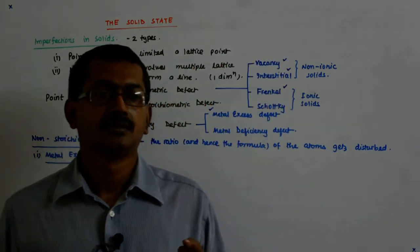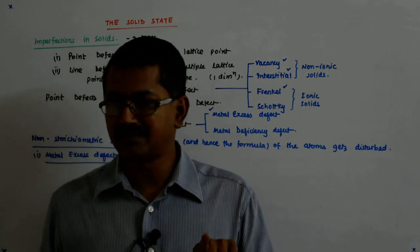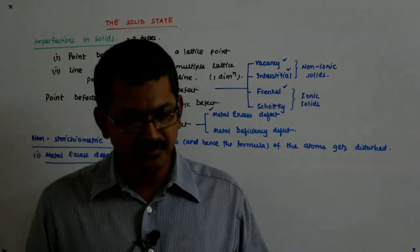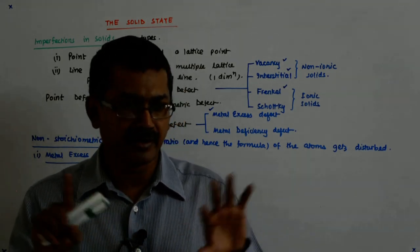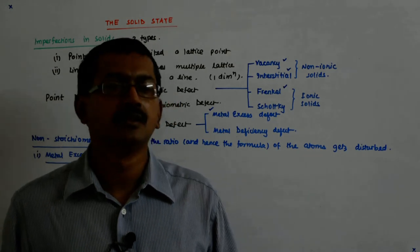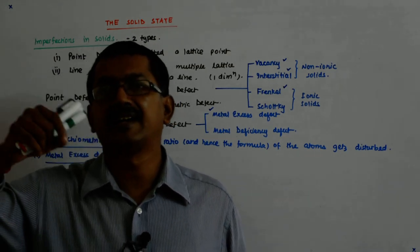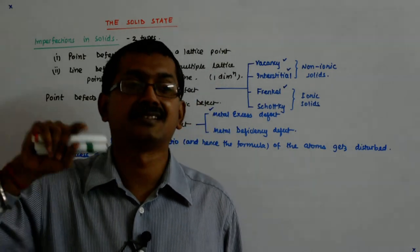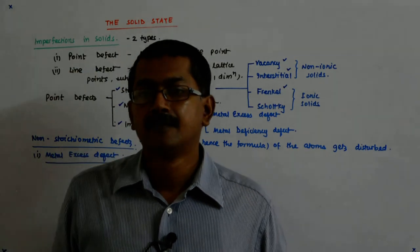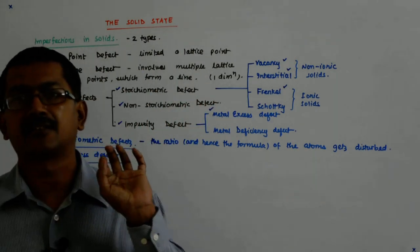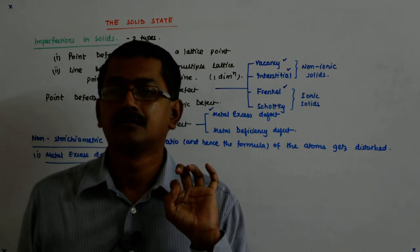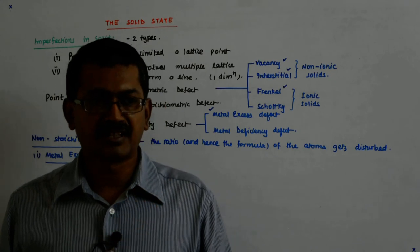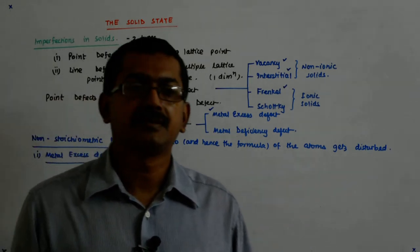Then what happens? One excess electron that is left by this Na, that now becomes in majority, so that starts diffusing into the crystal and many a times goes and resides from where the Cl has left. So what happens? You have got an electron at the vacancy site.